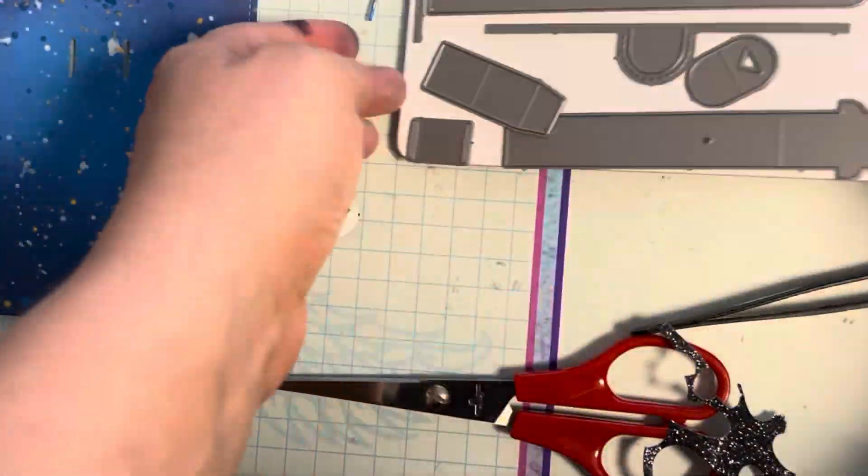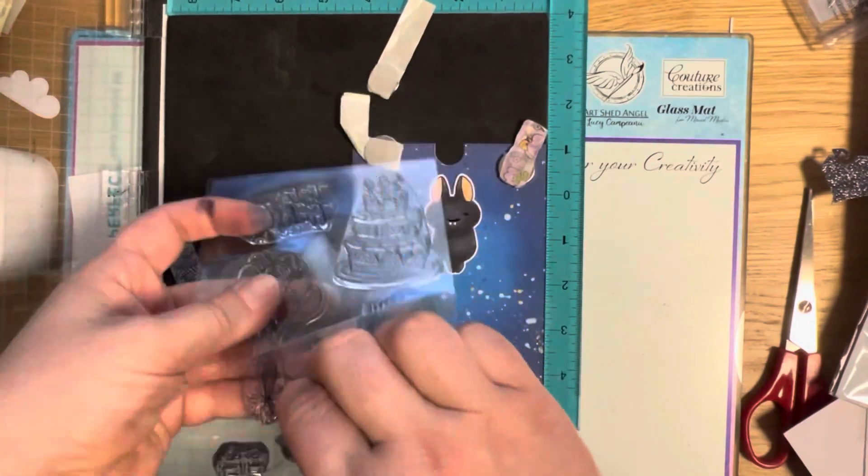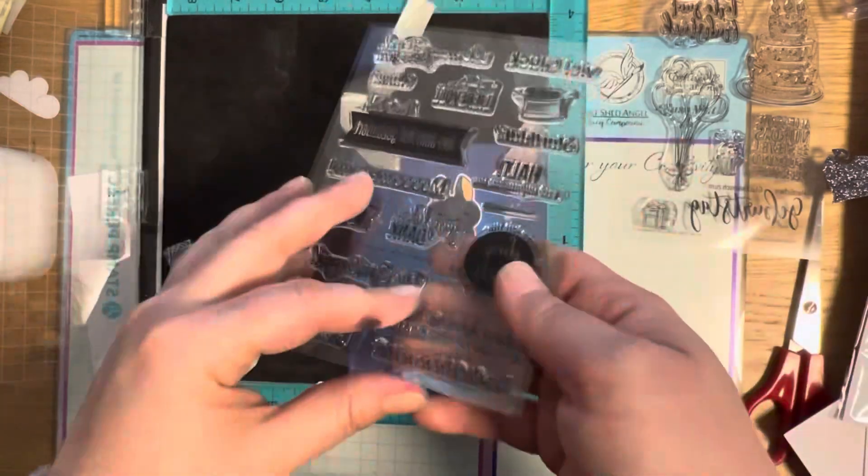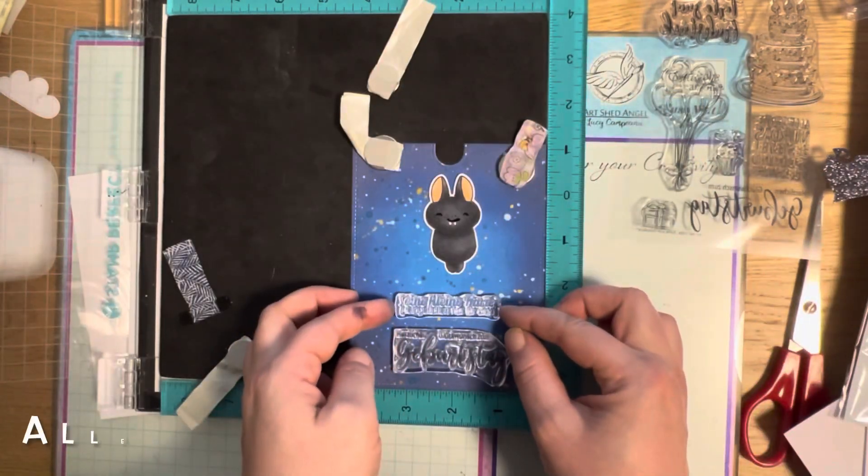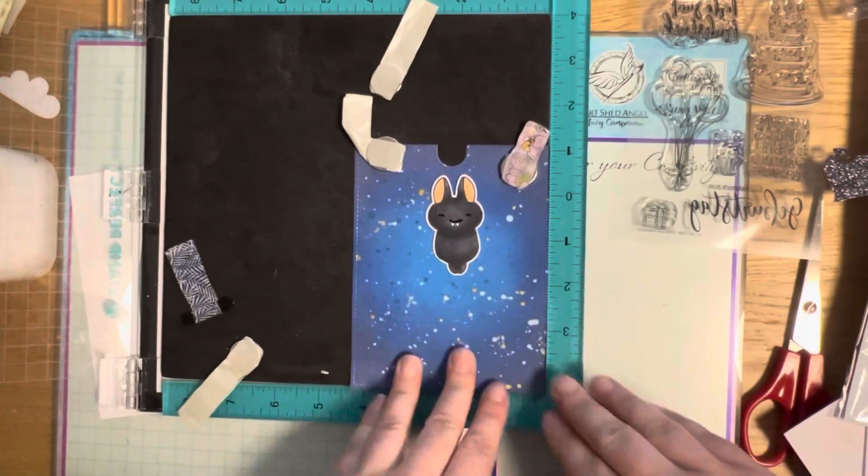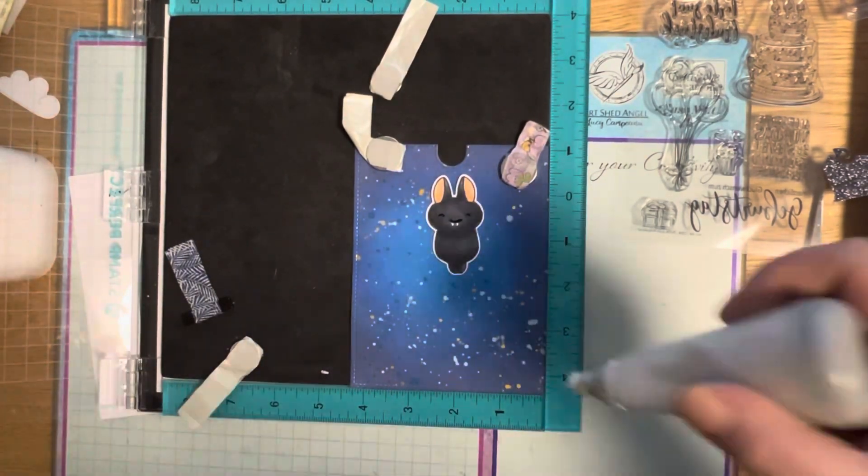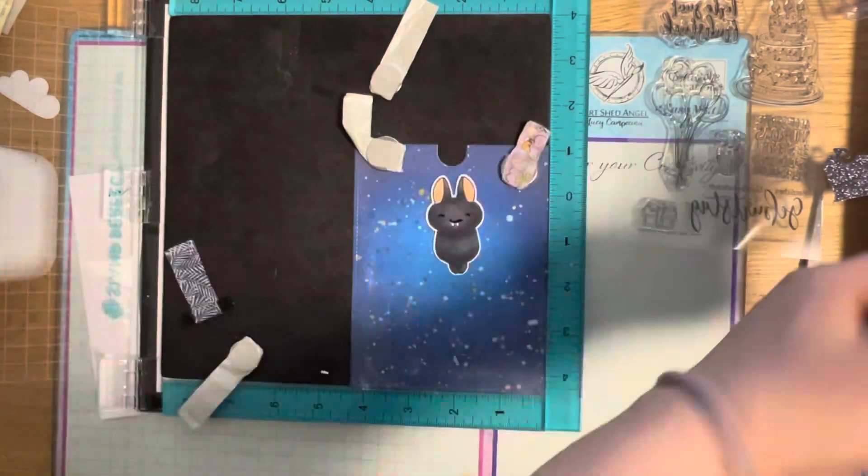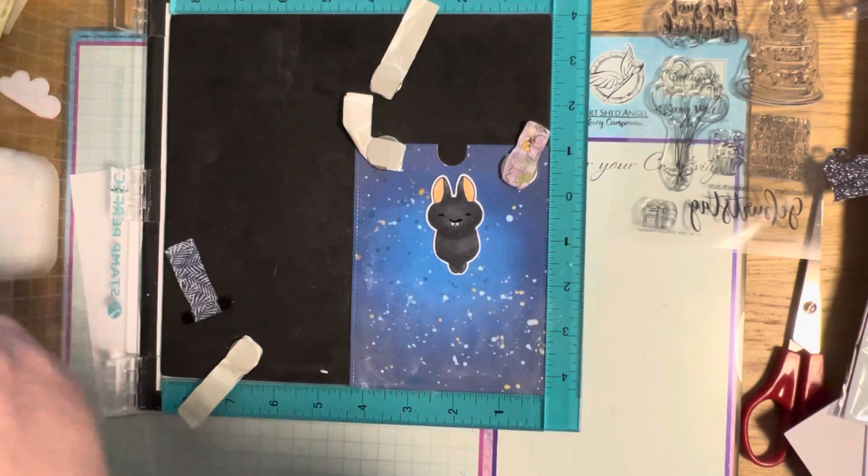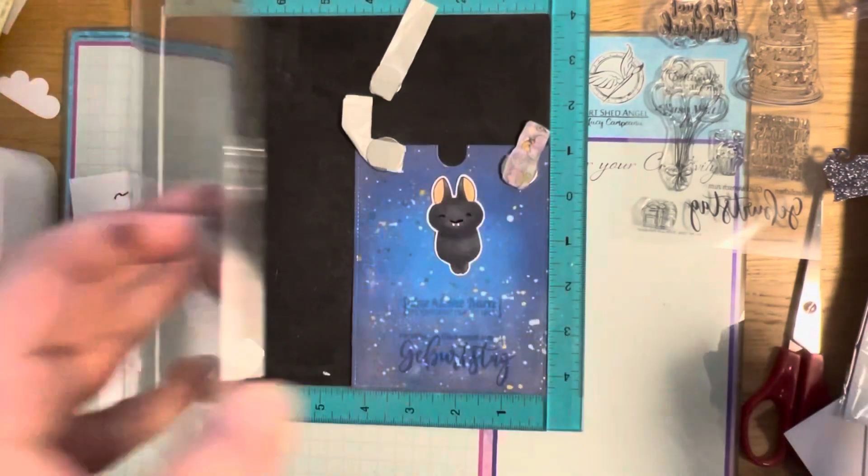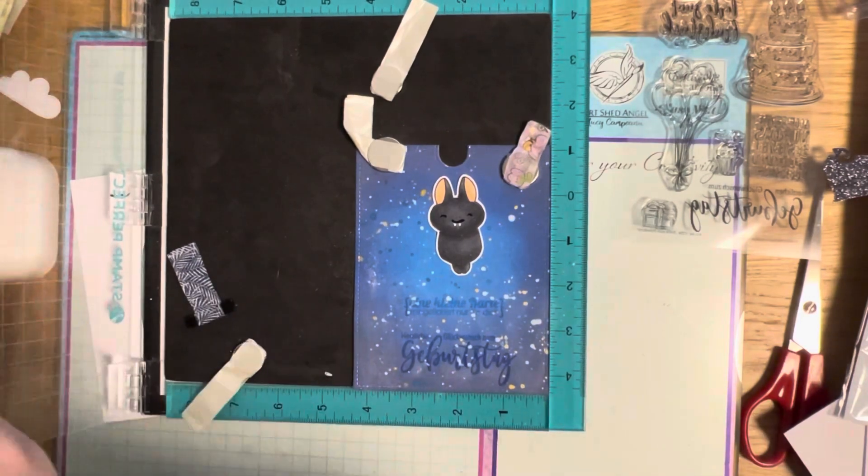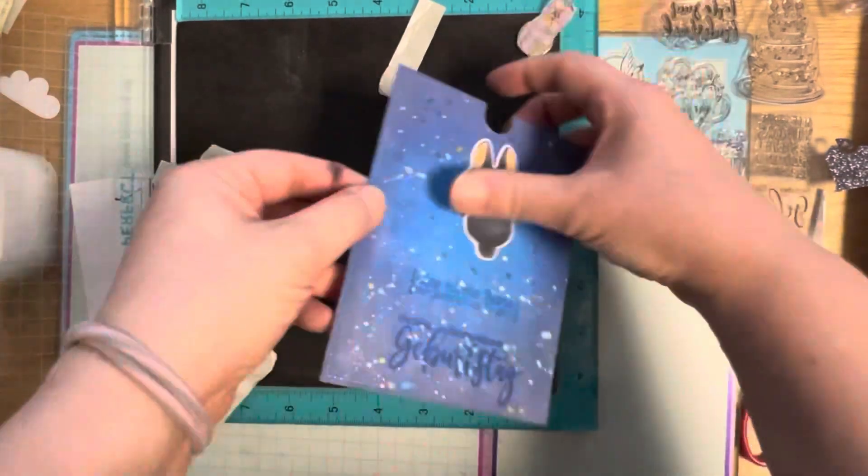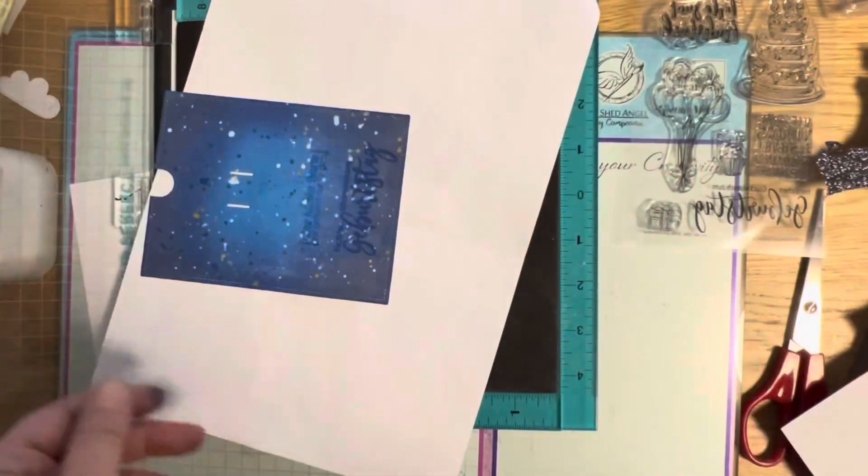I cut out the decorative piece for the pull tab with glitter paper. Here are some German sentiments. I think it says all the best for your birthday, and the other one says I flew in just for you, which really fits with that bat. I used the anti-static powder and the Versamark ink, the sticky ink.